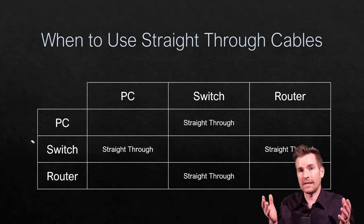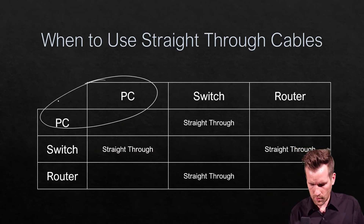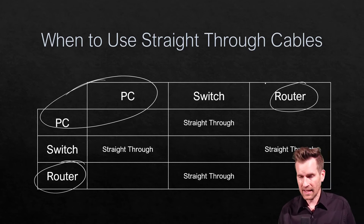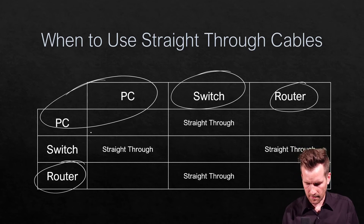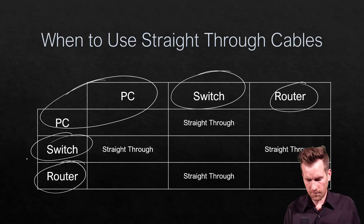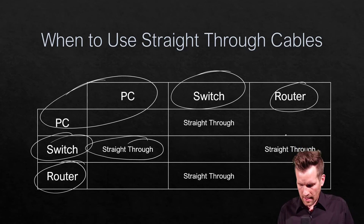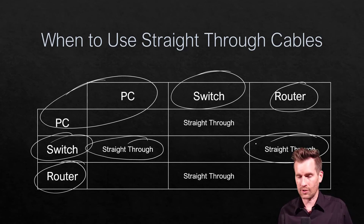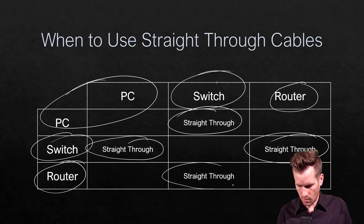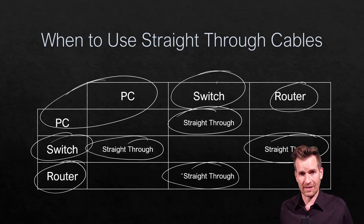Here's a table that describes it another way. MDI equipment includes PCs and routers; MDIX interfaces are on switches. A switch to PC is a straight-through; a switch to router is a straight-through — same in both directions. So we can see all the straight-through connections clearly.